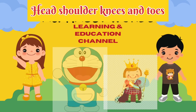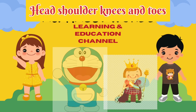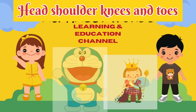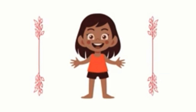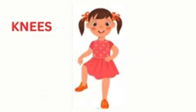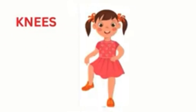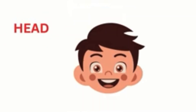Head, Shoulders, Knees and Toes. Let's start Body parts name. Head, Shoulders, Knees and Toes, Knees and Toes.